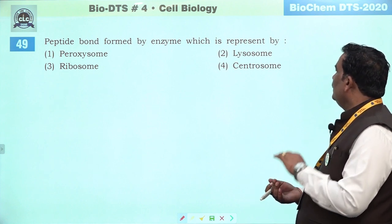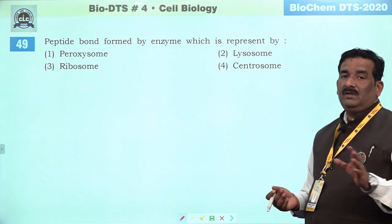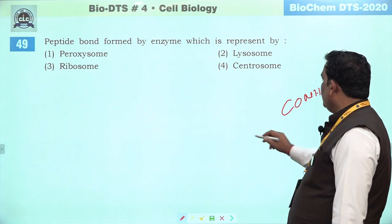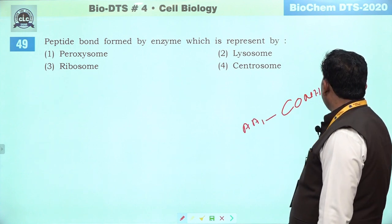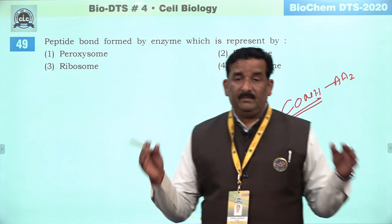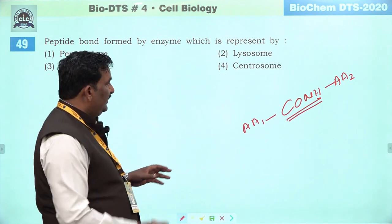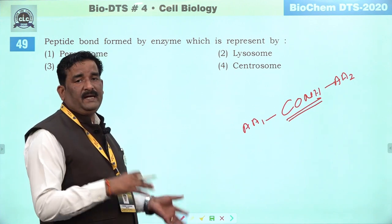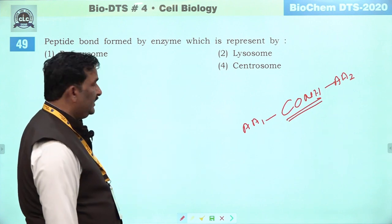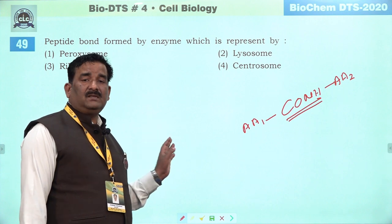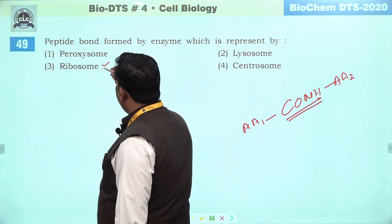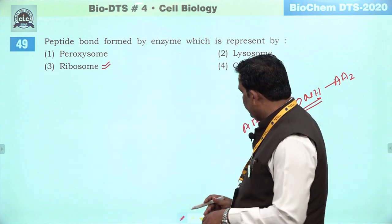Next question: formed on enzyme which is represented by obviously peptide bond. Peptide bond ka matlab hai C-O-N-H — they are prepared between amino acid 1 and amino acid 2nd. This is the peptide bond, necessary for polypeptide chain formation. They are prepared by amine group and carboxylic group and they release water and prepare peptide bond. Yeh jo process hai yeh ribosome ki large subunit par hoti hai during the protein formation. Third right answer hai.